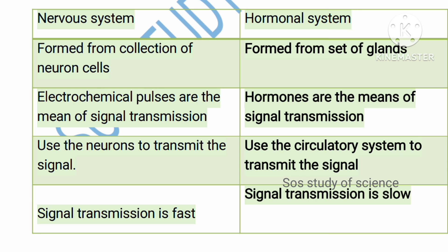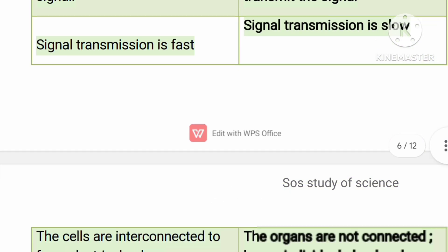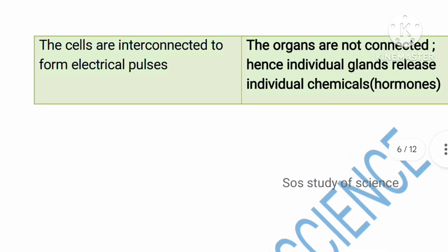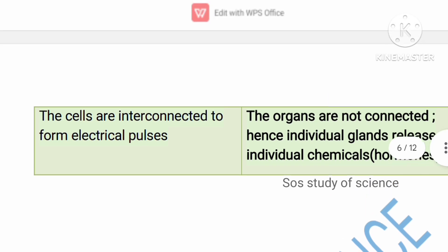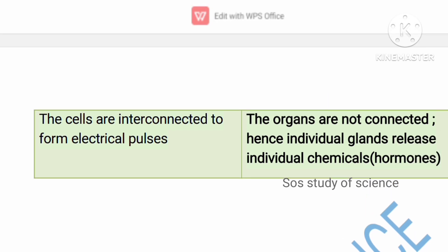The hormonal system uses the circulatory system — blood — to transmit signals. Nervous system signals are transmitted very fast whereas hormonal system signals transmit very slowly. Cells are interconnected to form electrical impulses in the nervous system. In the hormonal system, organs are not connected — each individual gland releases its own chemical, and those chemicals move through the blood to the targeted regions.